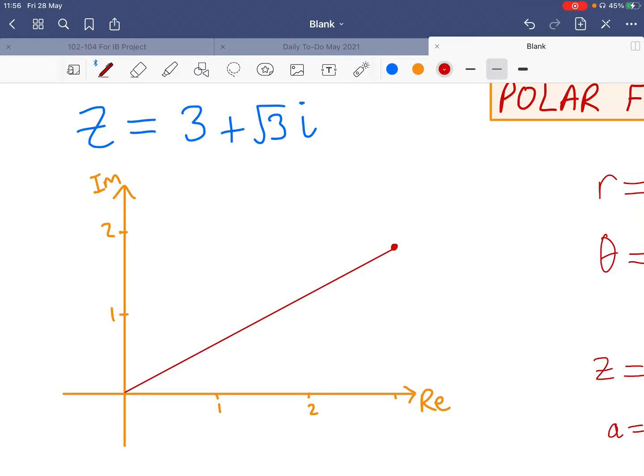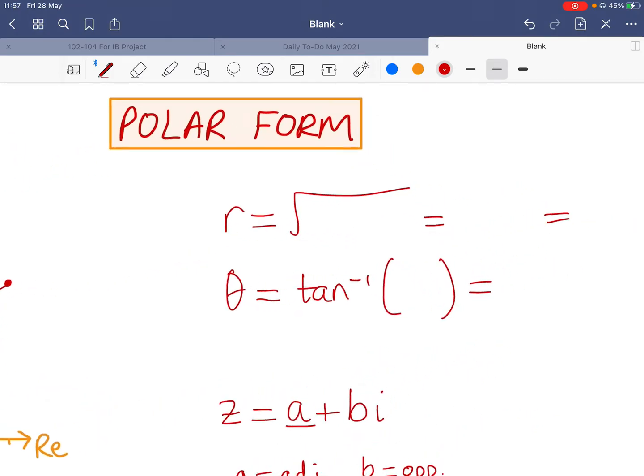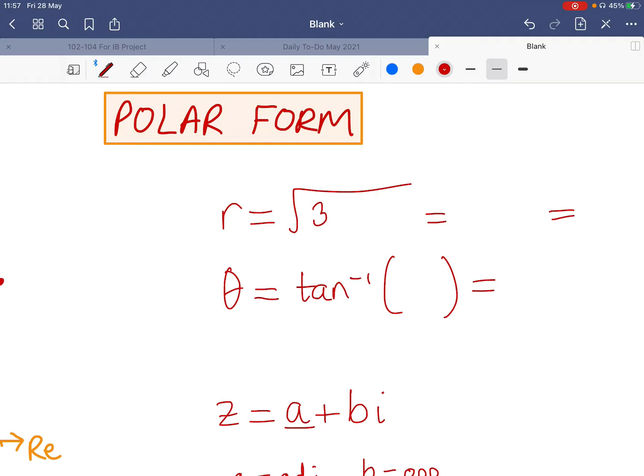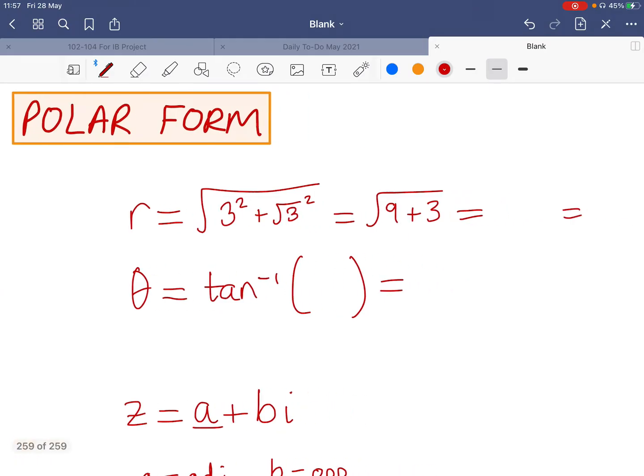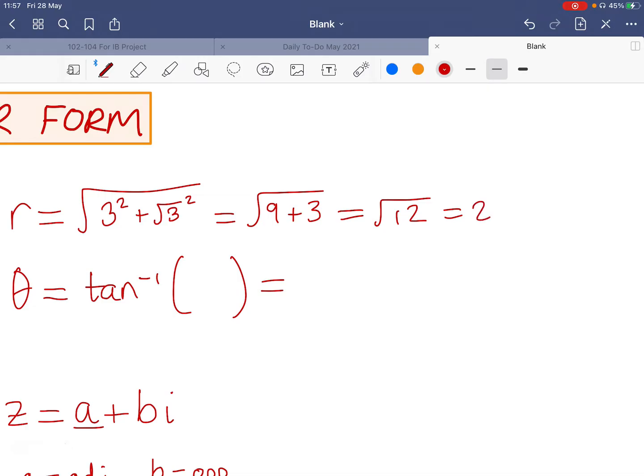And another thing you may have done is to find the modulus r, that's the length of this line, this distance, and the argument, the theta, the angle between the real axis and this complex number. So how do we find r? Well, with essentially the Pythagorean theorem, we're going to have the real part squared plus the imaginary part squared, all square rooted. So in this case, that's going to be the square root of 9 plus 3, that's root 12. And if we want to simplify that, that's root 4 times root 3, so that's 2 root 3.